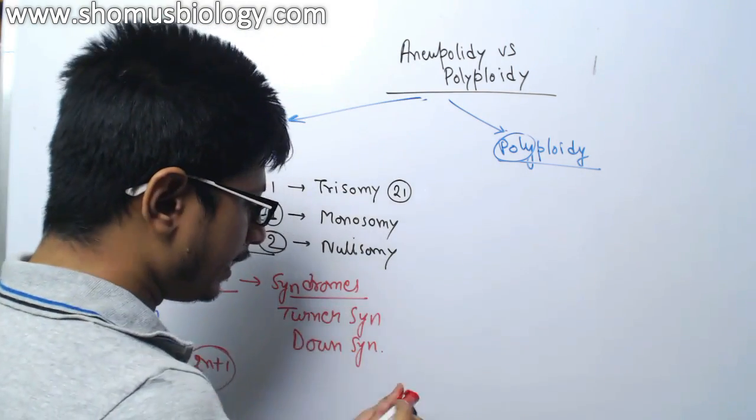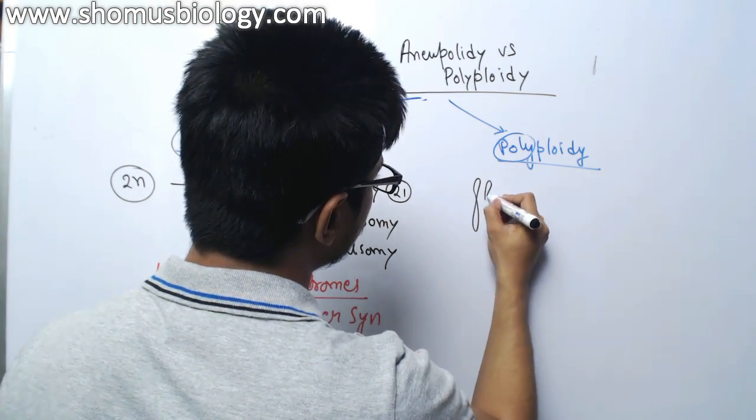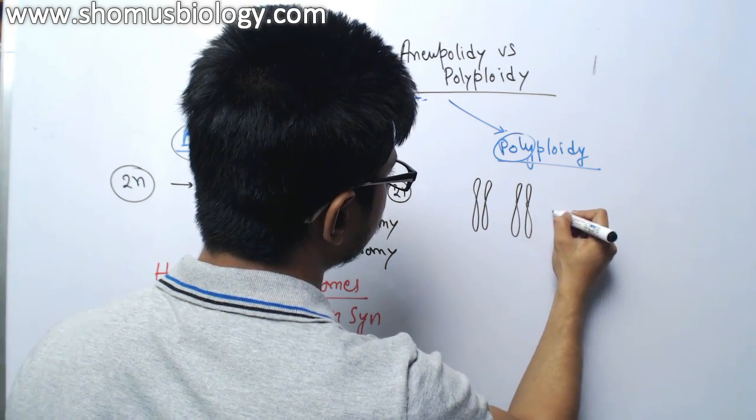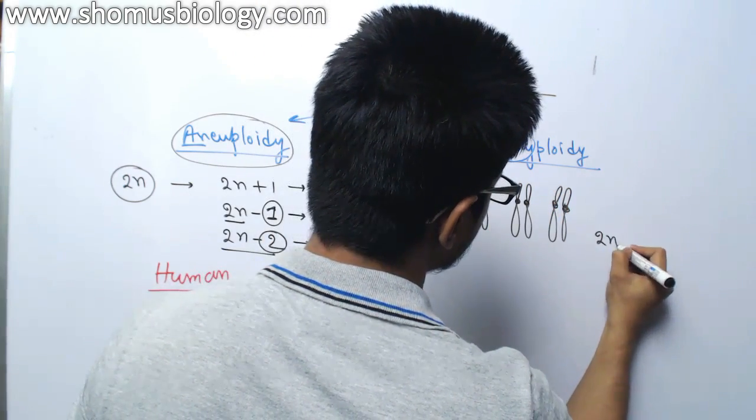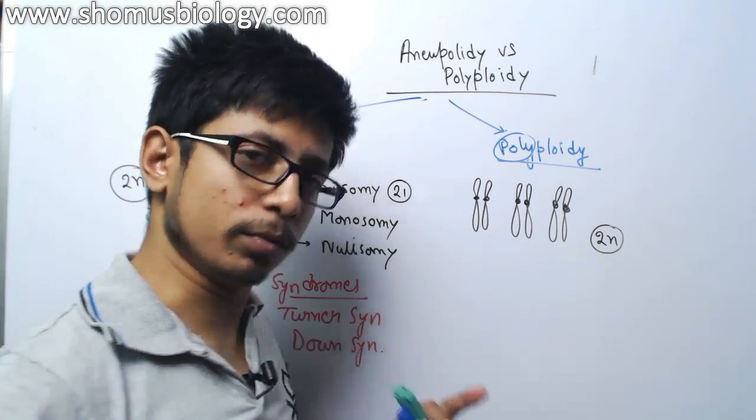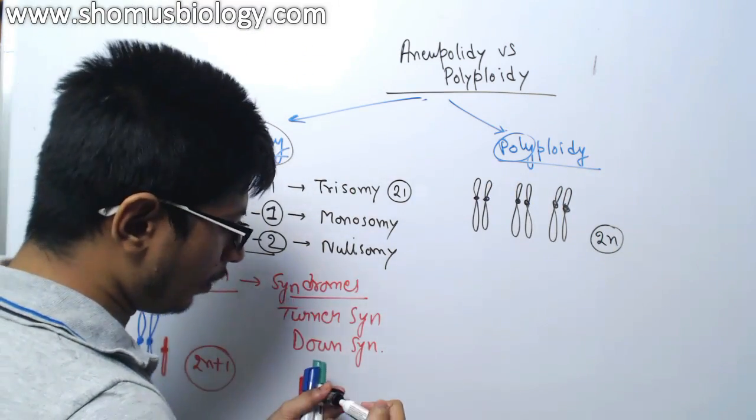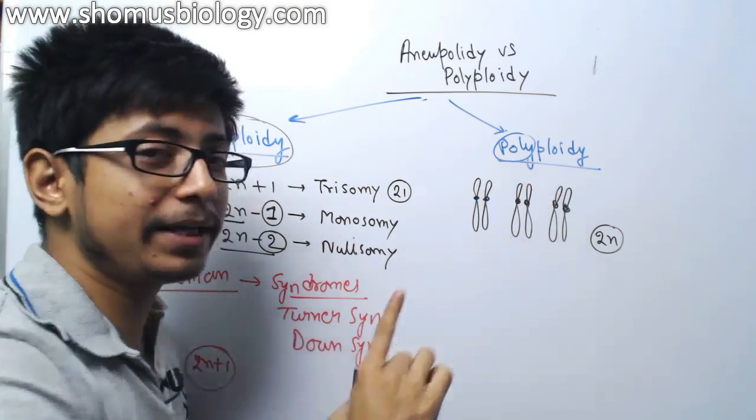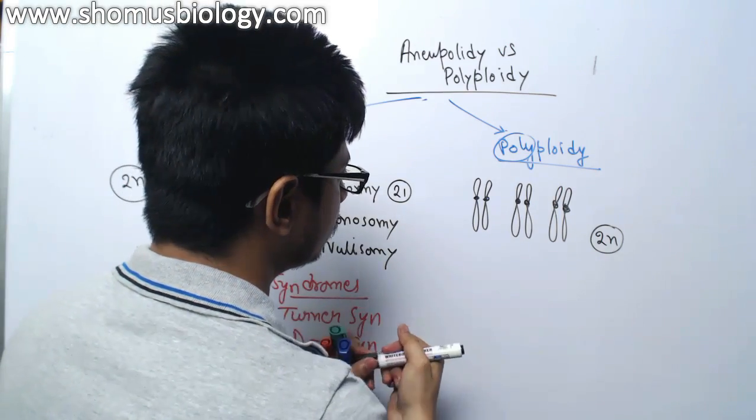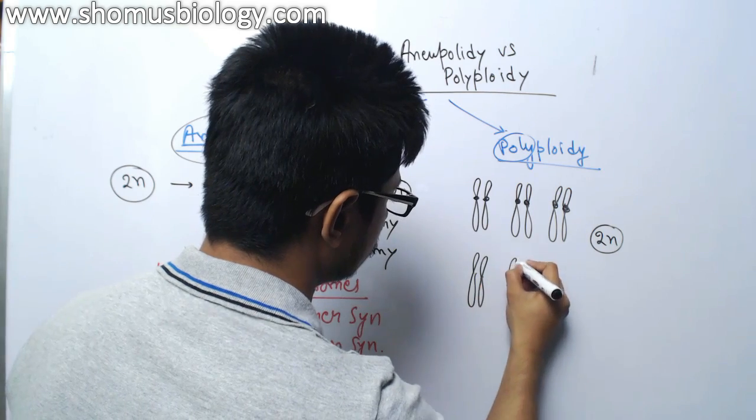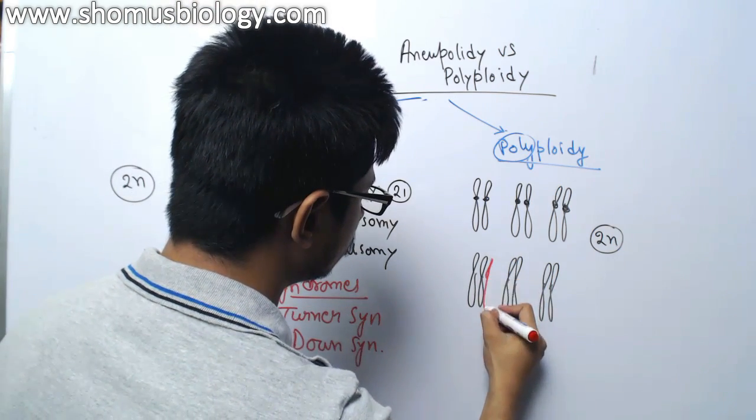What happens in polyploidy? Let's say normally all individuals we are looking at here contain, this is a 2n number cell. Let's say an organism only contains 3 chromosomes. 3 sets of the chromosome, 2n pairs. This is a normal cell. Now, if they have a change, polyploidy means there will be change in the number of chromosome in set. Instead of 2n, we can have one extra chromosome per set.